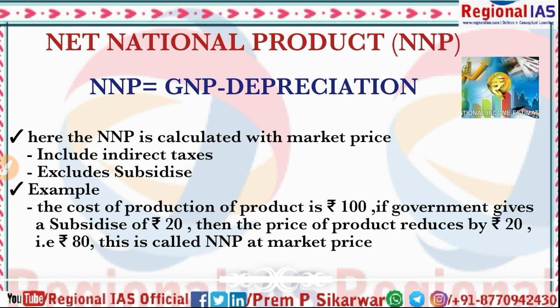Next is Net National Product (NNP). NNP equals GNP minus depreciation. Depreciation means that over time, the value of assets falls. After deducting that depreciated value, the remaining final monetary value is the NNP. Now, the NNP is calculated at market price.